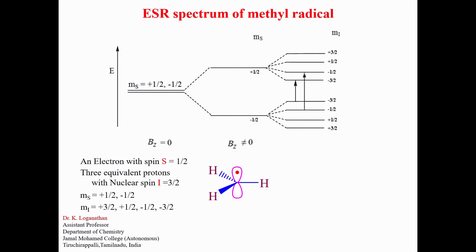four ESR lines are observed following the selection rule: change in MS equals plus one or minus one, and change in MI equals zero.